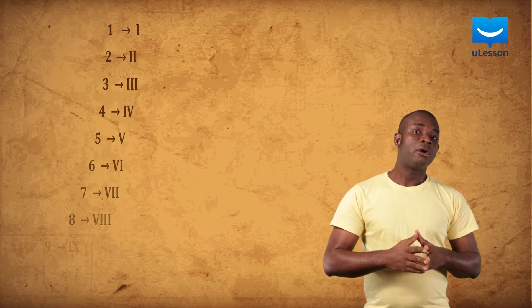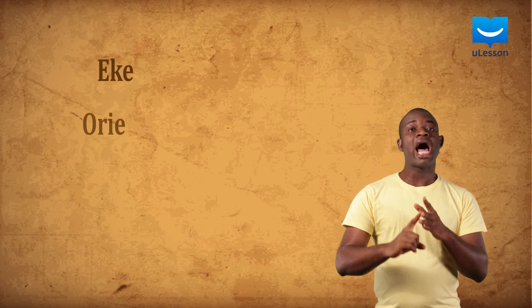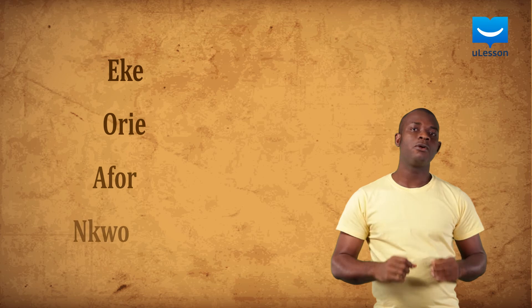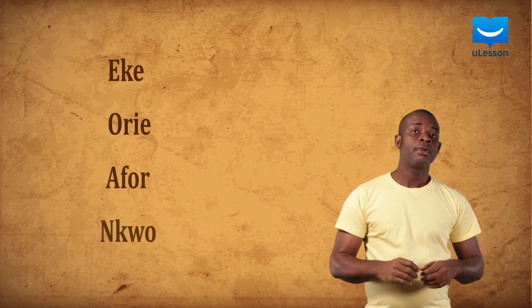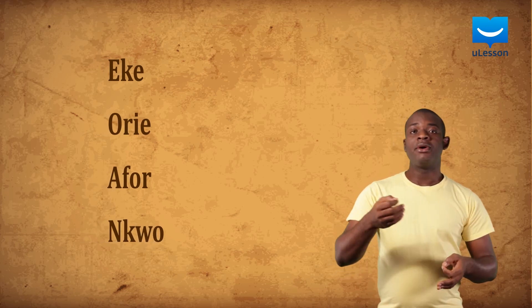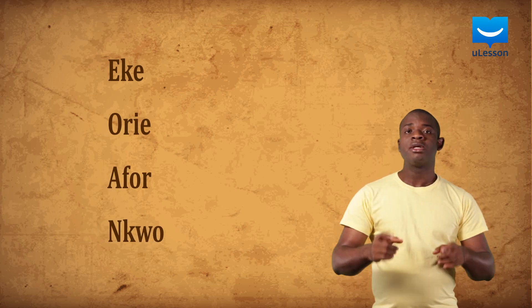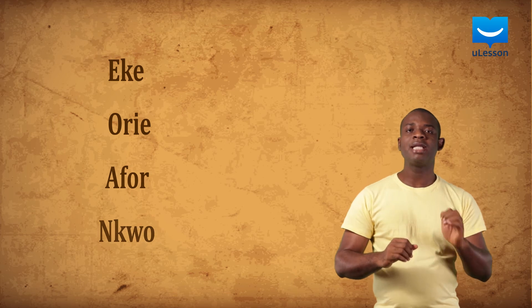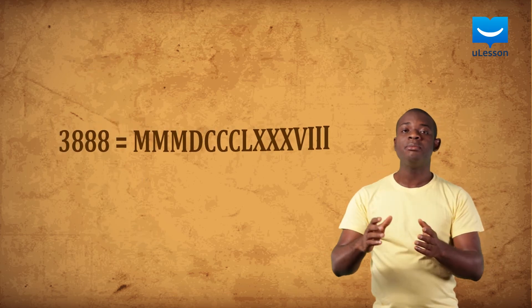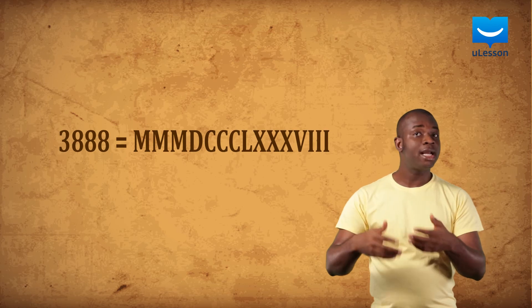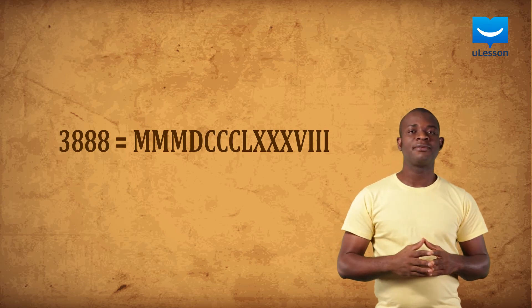Even the Igbo culture in eastern Nigeria counted the days in fours as Eke, Ori, Afo, and Nko. This way of counting and recording numbers was still cumbersome and had restrictions, because people would need to draw many symbols repeatedly to record large numbers.